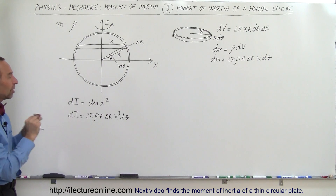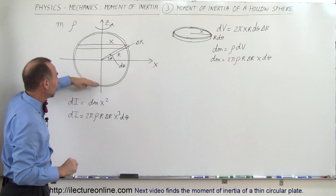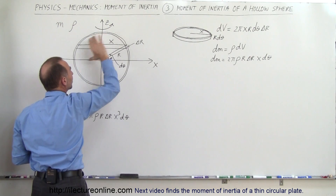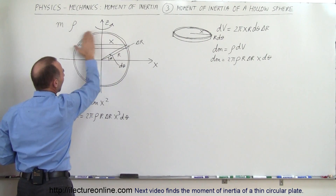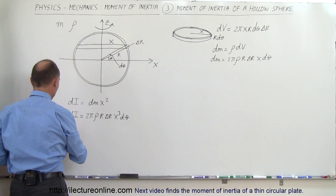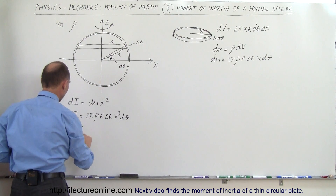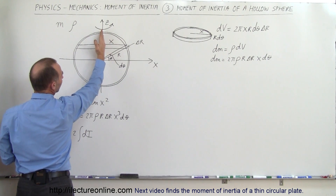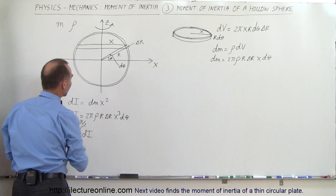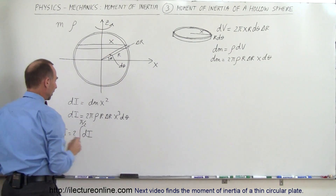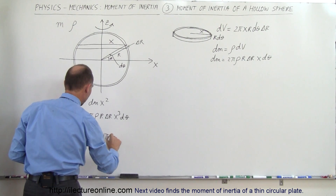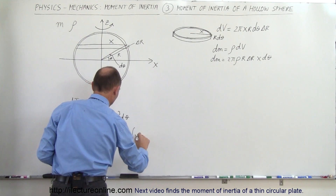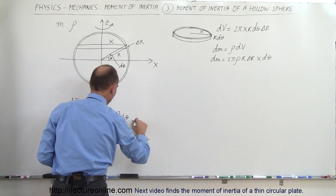Now we have the moment of inertia of that small disc. To find the moment of inertia of the whole sphere, we integrate all the little slices, or we can integrate over the top half and double it. So I = 2 times the integral of dI, integrating from 0 to π/2. Doubling gives 4π rho r delta r times the integral of x³ d theta from 0 to π/2.